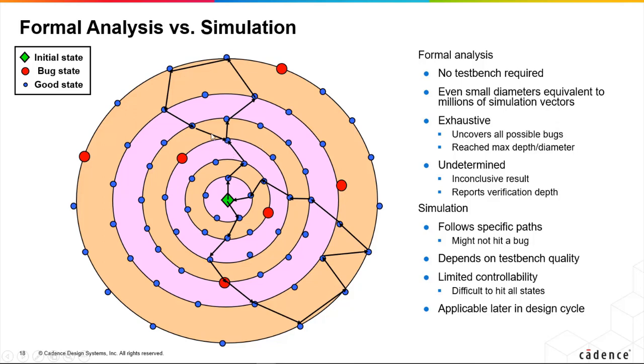Even if you could see this map of states, which you can't, but if you could, it's still probably not controllable. You couldn't follow that specific path if you wanted to because you wouldn't know what stimulus you needed to do that.